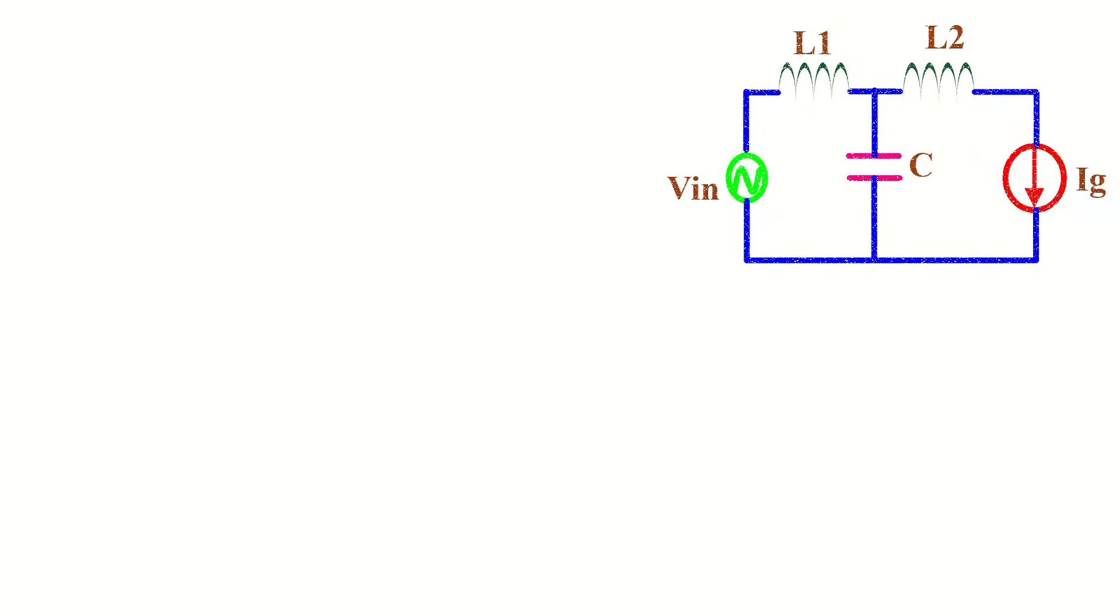The transfer function of an LCL filter represents the ratio between the grid current and the inverter voltage in the Laplace domain. It is expressed as 1 by s cube L1 L2 C plus s into L1 plus L2.